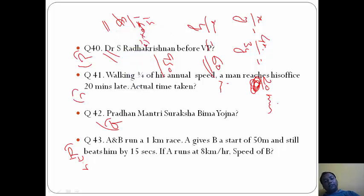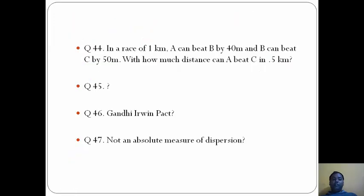Now B runs not 1 kilometer but he gets a start of 50 meters, so he runs 950 meters. A beats B by 15 seconds. So 950 upon speed, we get 435 seconds. The speed here we will get in meters per second, we will convert into kilometers per hour by multiplying by 18 by 5, and we will get the answer, that is 7.4 kilometers per hour.